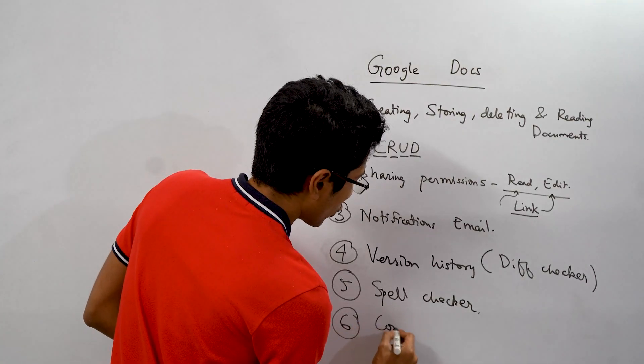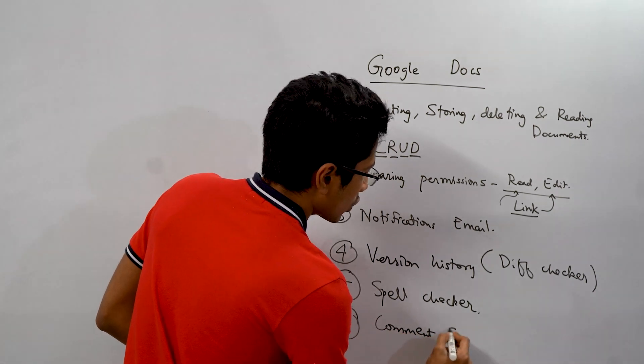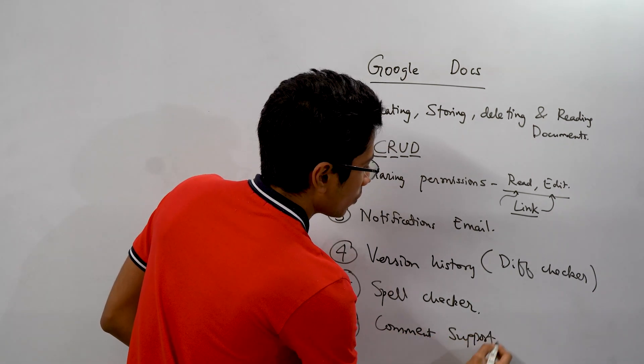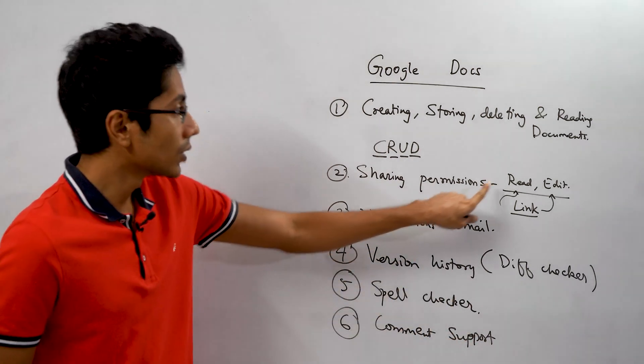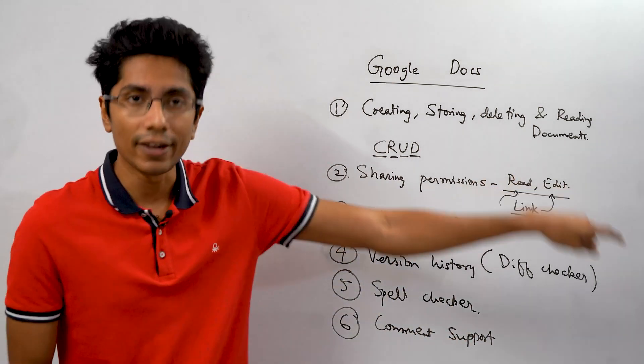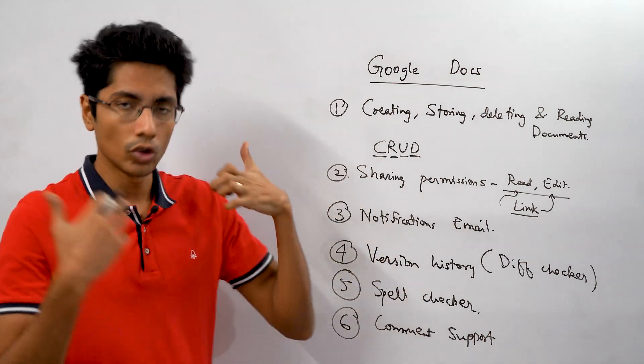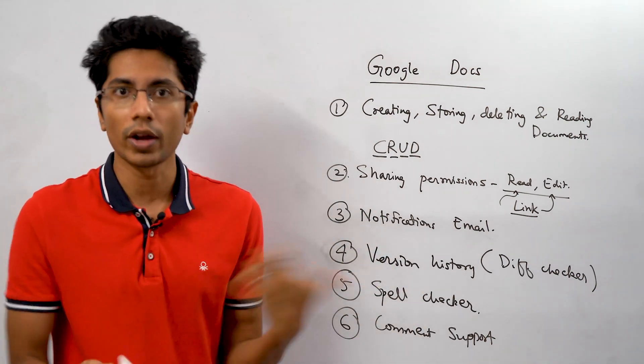Sixth thing would be comment support. So if you have multiple collaborators on Google Doc, you've shared the document to a lot of people, they can read it and possibly suggest edits or they can directly comment on the document saying that this is what I feel about it.